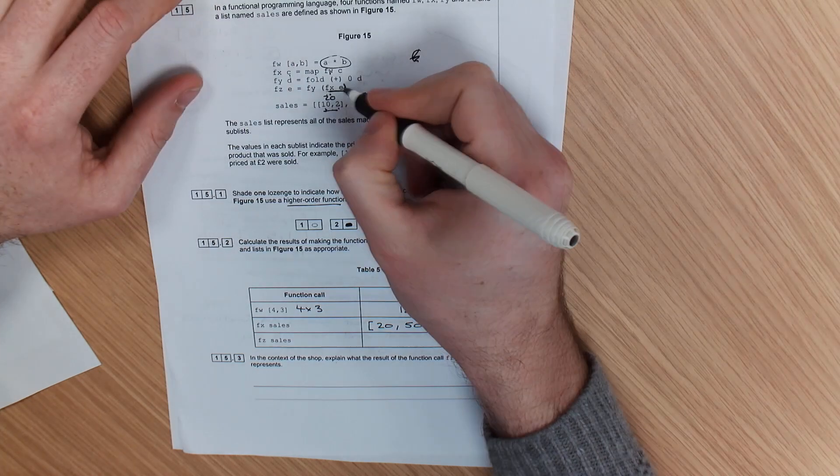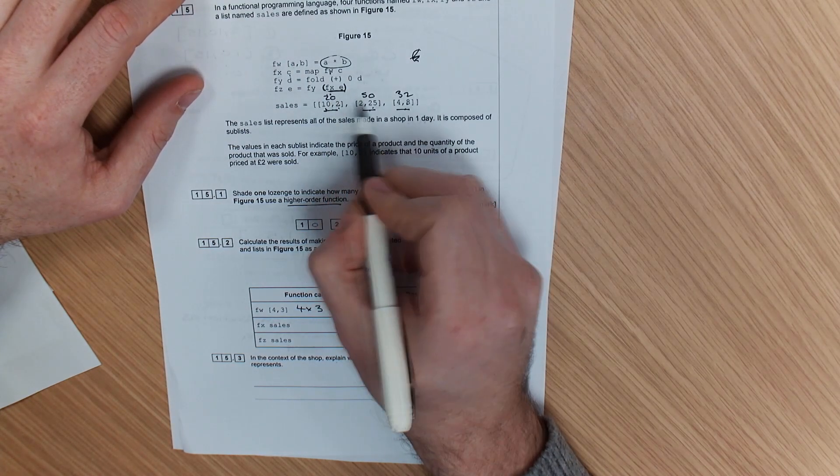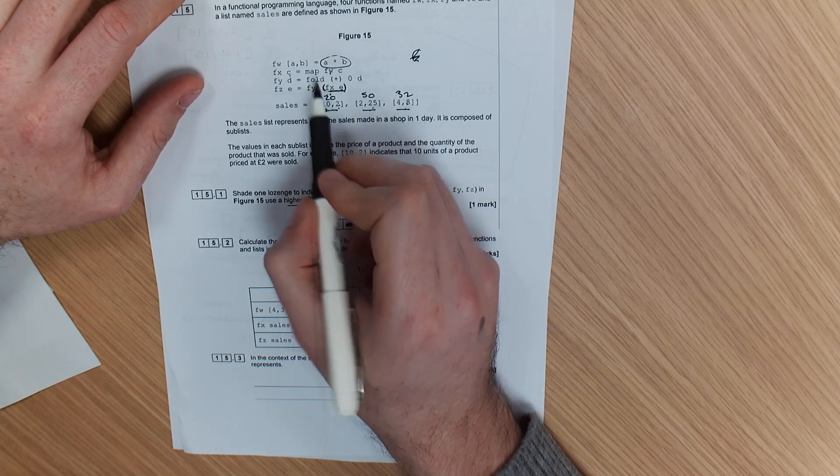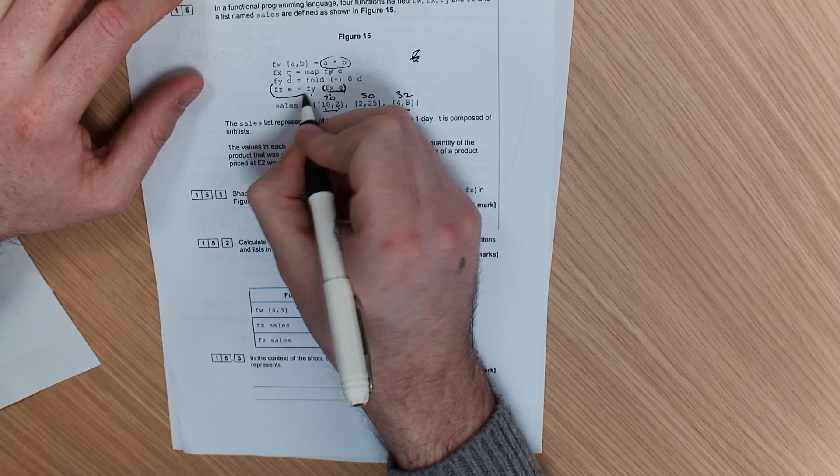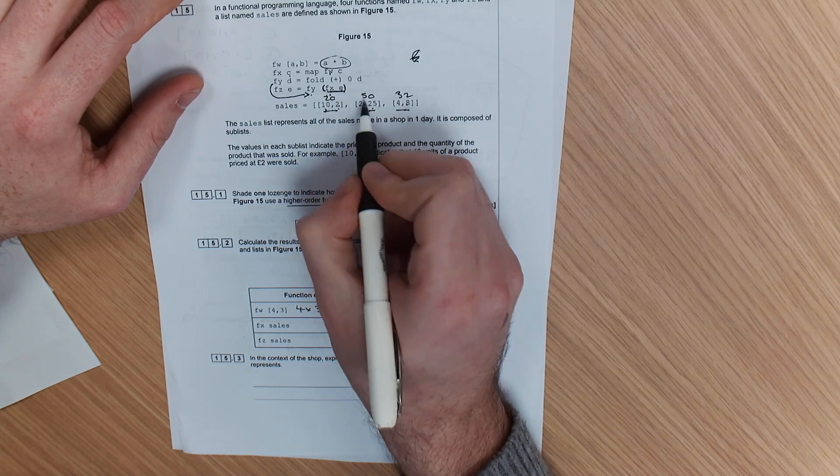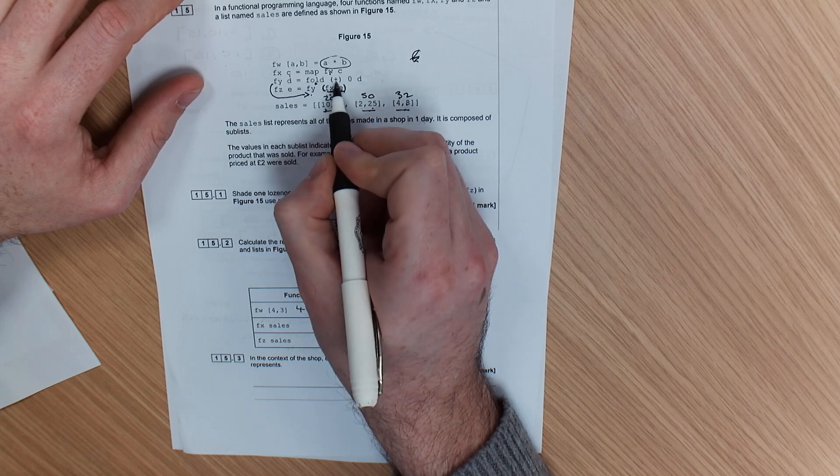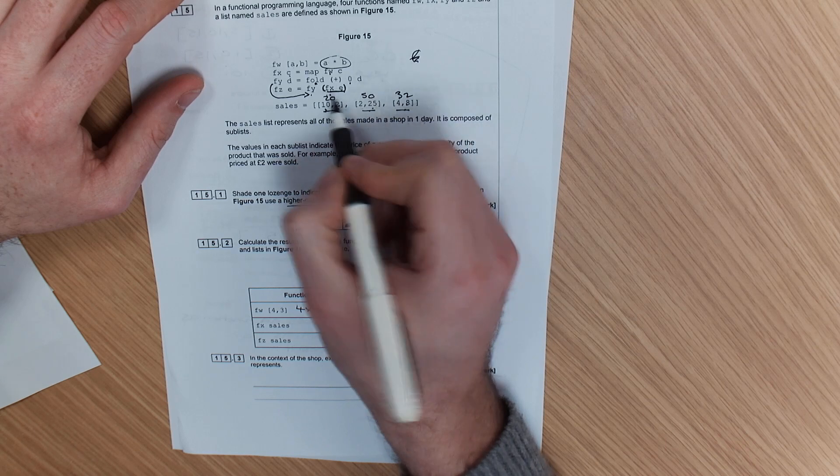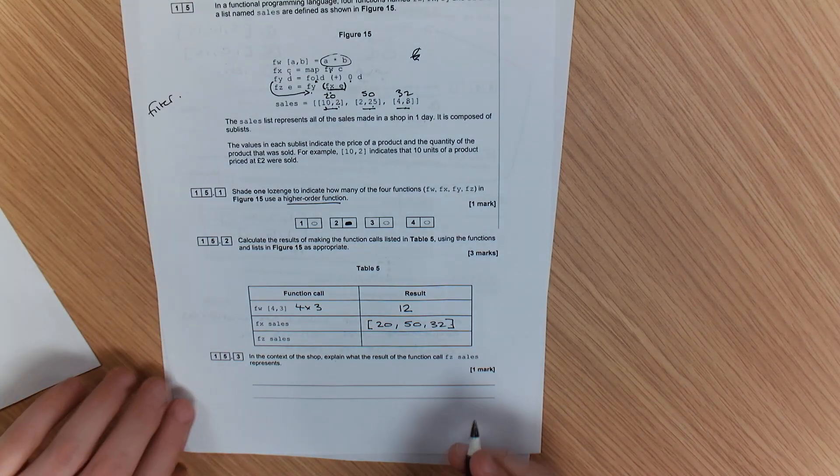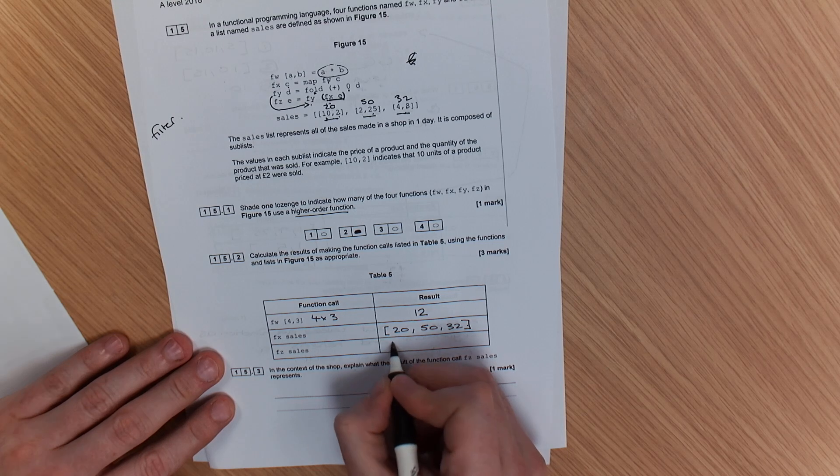Now, on this function that we've ended up with this list stored as e: 20, 50, and 32, we then use FY on that. So 20, 50, and 32, the fold function that we are using, we are adding them to zero. So that is 20 plus 50 plus 32, which will give you 102.